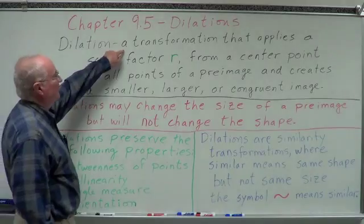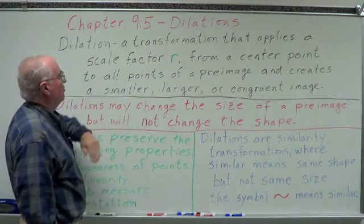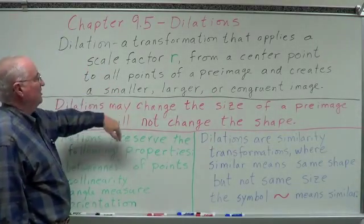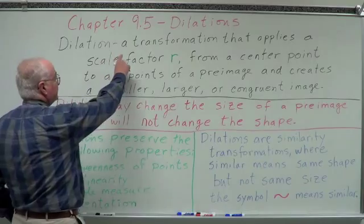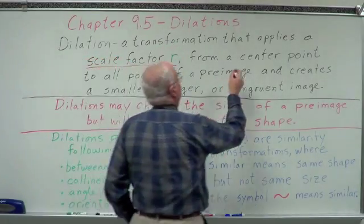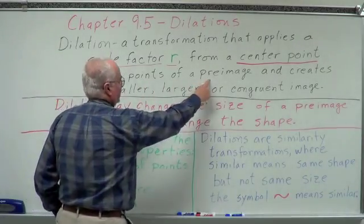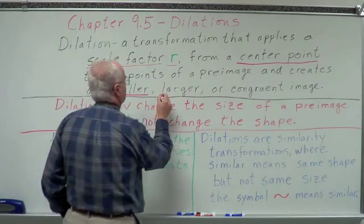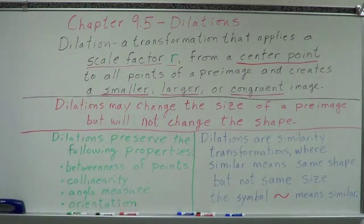A dilation is a transformation that applies a scale factor R from a center point to all points of a pre-image, and creates a smaller, larger, or congruent image. Key elements: you have to have a scale factor, you have to have a center point, and your image is either going to be smaller, larger, or congruent.